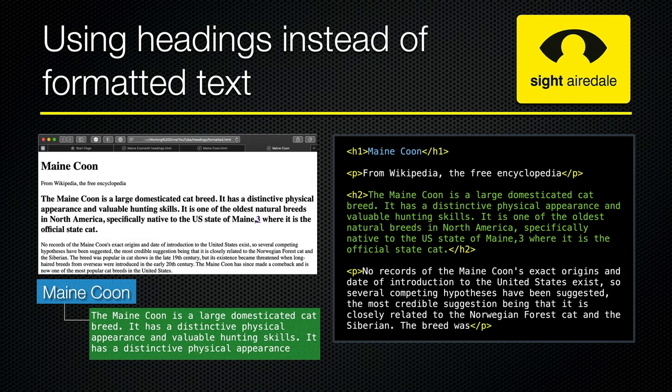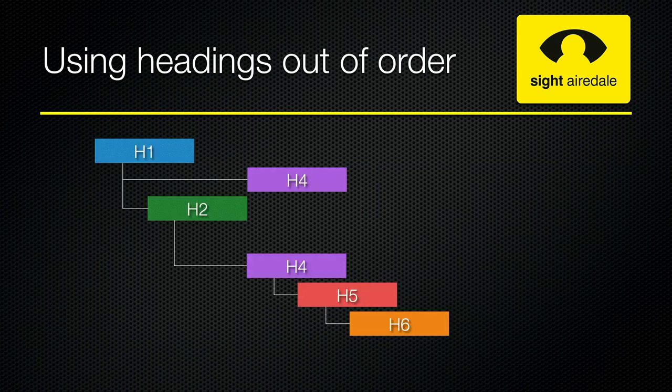The next common mistake is using headings out of order. Headings should be in a hierarchical order, but in this case we can see that H4 comes directly after H1 — H2 is there, but H3 is missing.